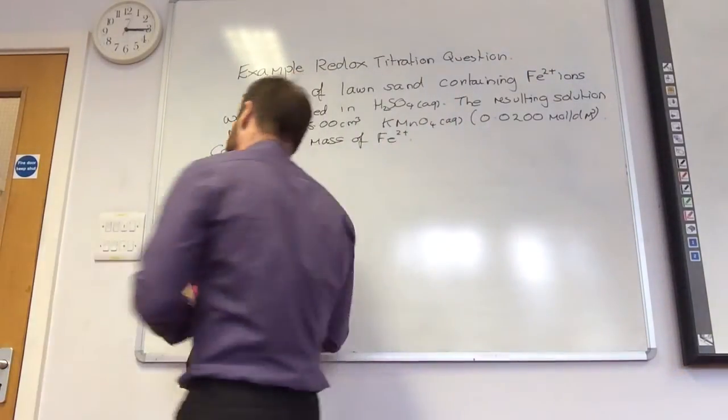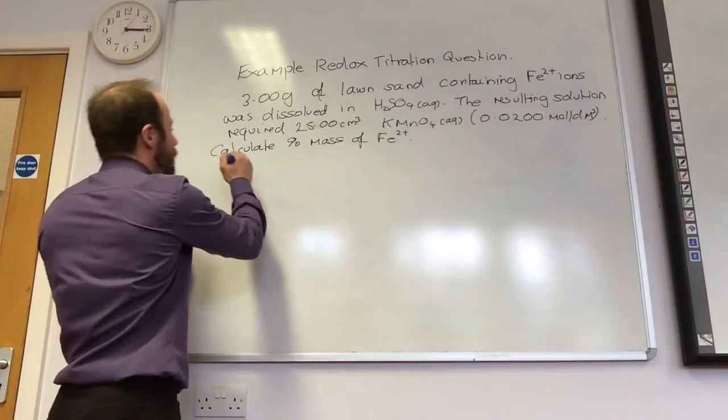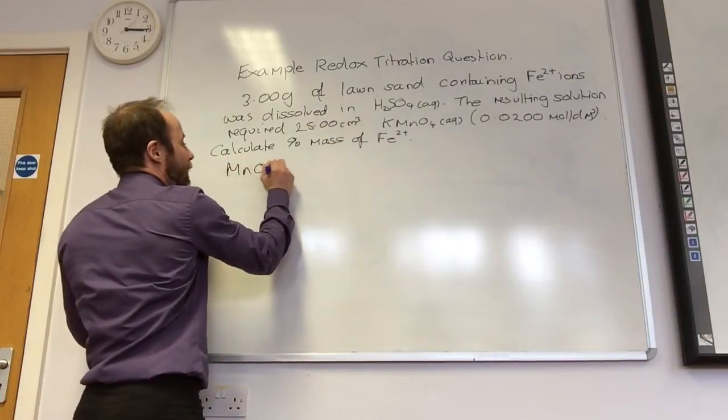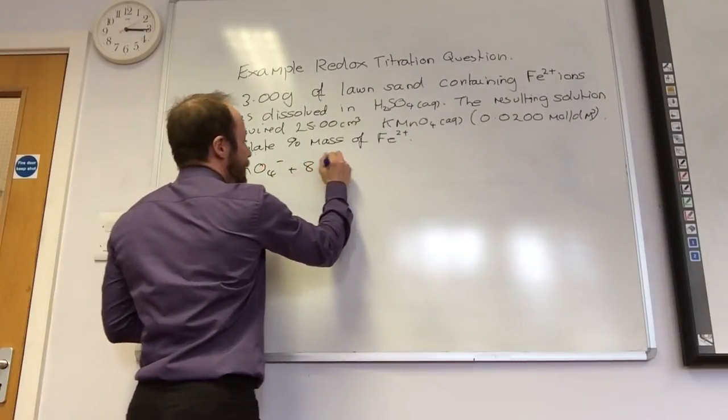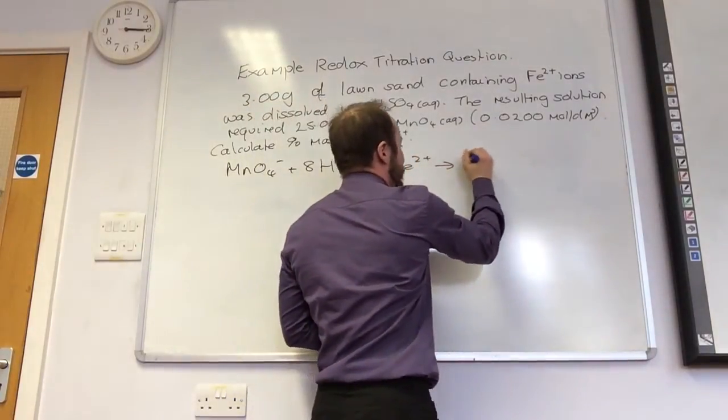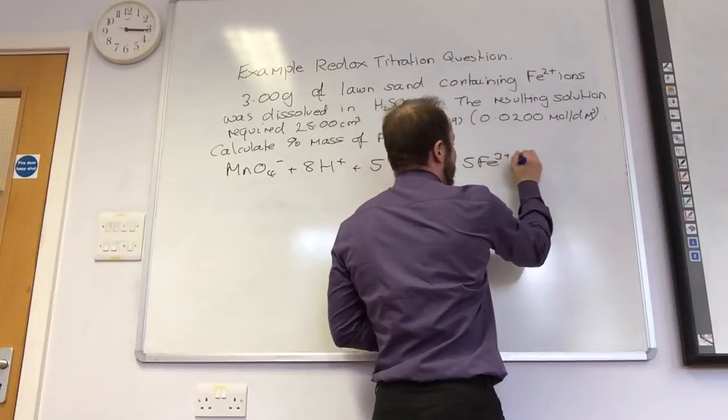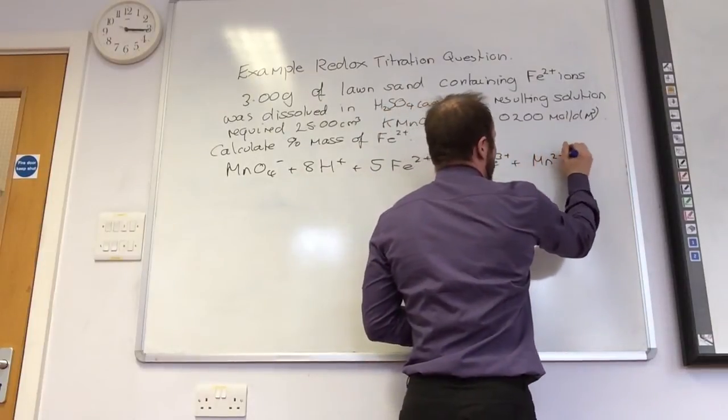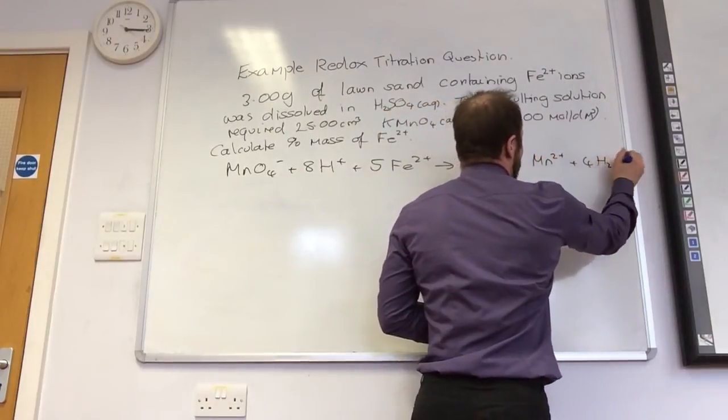So, what's the first thing I always do? Moles! Well, I need the equation. So... Moles of the manganate. Plus 8 H⁺, plus 5 Fe²⁺, goes to 5 Fe³⁺, plus Mn²⁺, plus 4 H₂O.